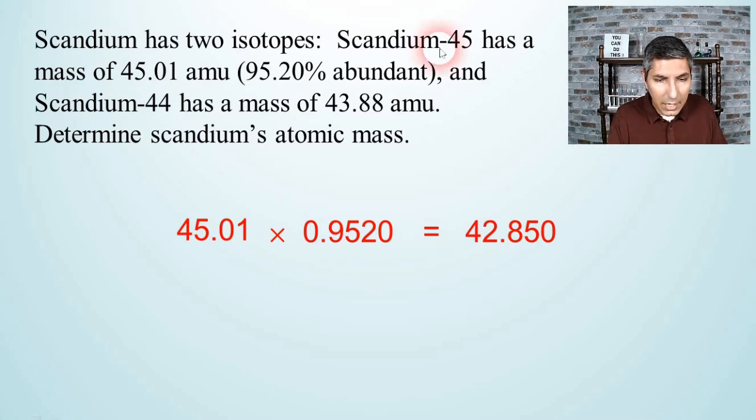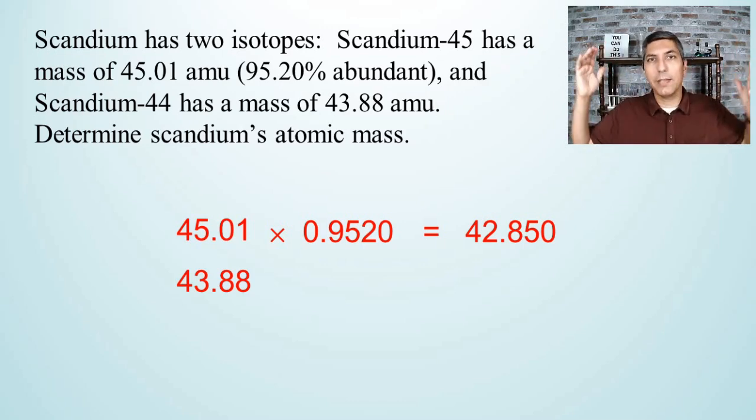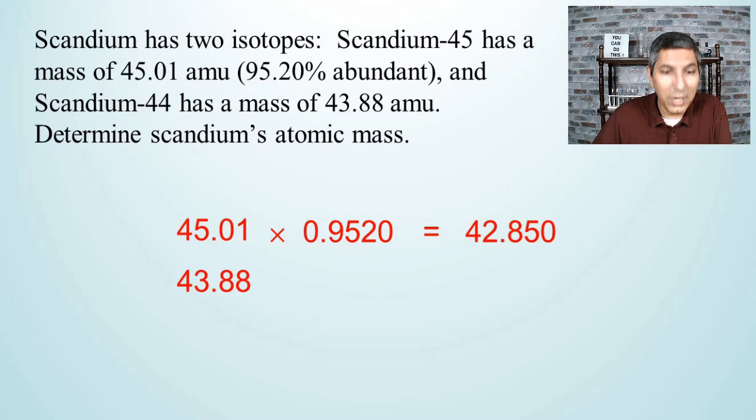Now, the next isotope is going to have a mass of 43.88, and we have a little problem here. You might notice that the problem does not tell us the percentage abundance of the other isotope. So what do we do? Do we throw our hands up in disgust and run away? Well, no. We know, hopefully we know, that the sum of percentages should be 100, shouldn't it? So if we have two objects and one is 95.20%, the other one has to be 4.80%. How do you write 4.80% as a decimal? Be very careful.